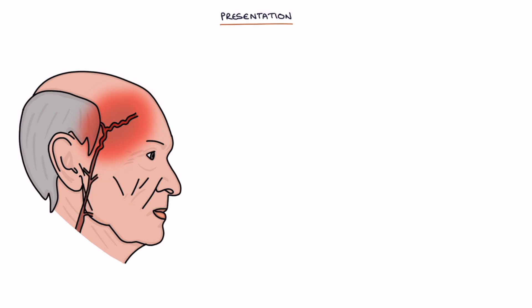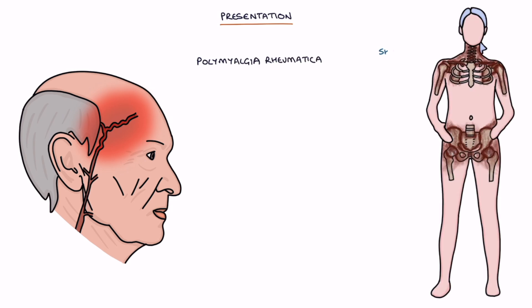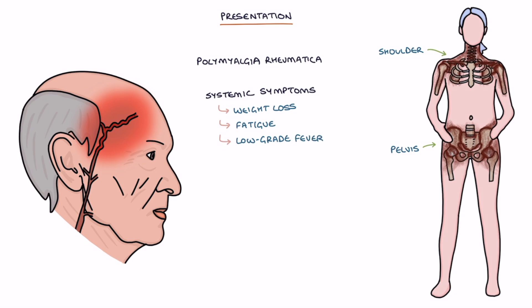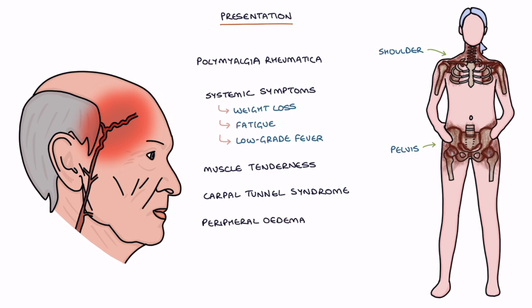Associated features include symptoms of polymyalgia rheumatica, such as shoulder and pelvis pain and stiffness, systemic symptoms like weight loss, fatigue, and a low-grade fever, muscle tenderness, carpal tunnel syndrome affecting the hands, and peripheral edema with swelling in the ankles.